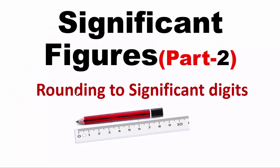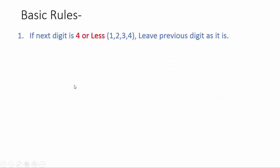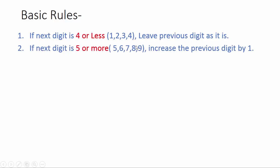Hello friends, in this video we will talk about rounding to significant digits. There are two basic rules about rounding to significant digits. Rule one: if the next digit is four or less — like one, two, three, four — leave the previous digit as it is. Rule two: if the next digit is five or more — that means five, six, seven, eight, nine — increase the previous digit by one.